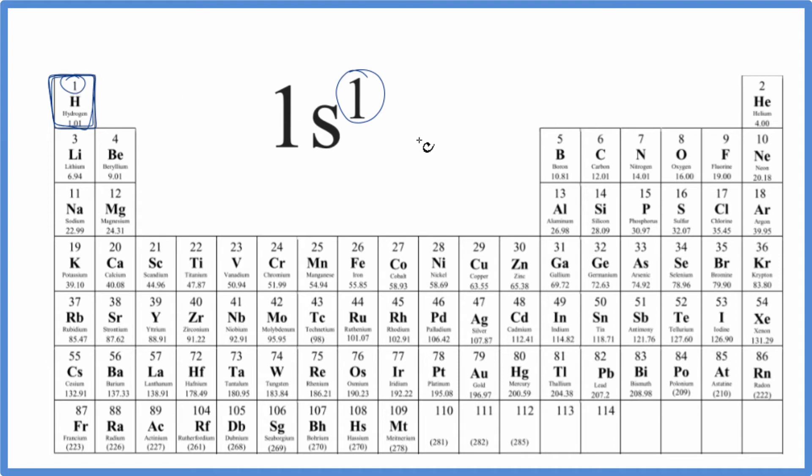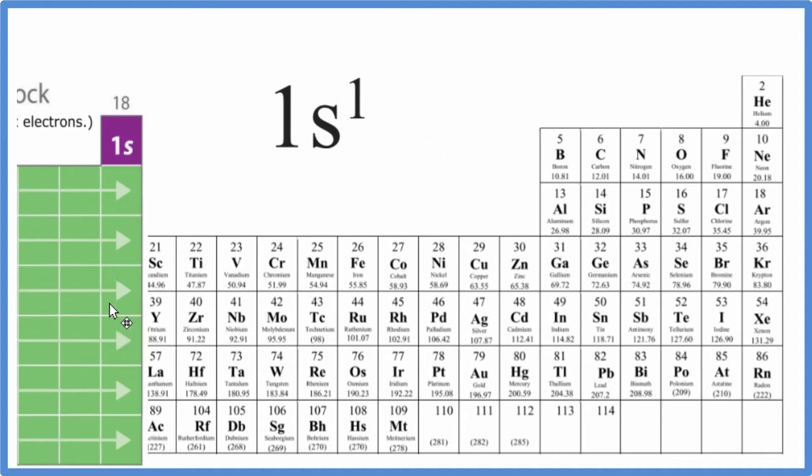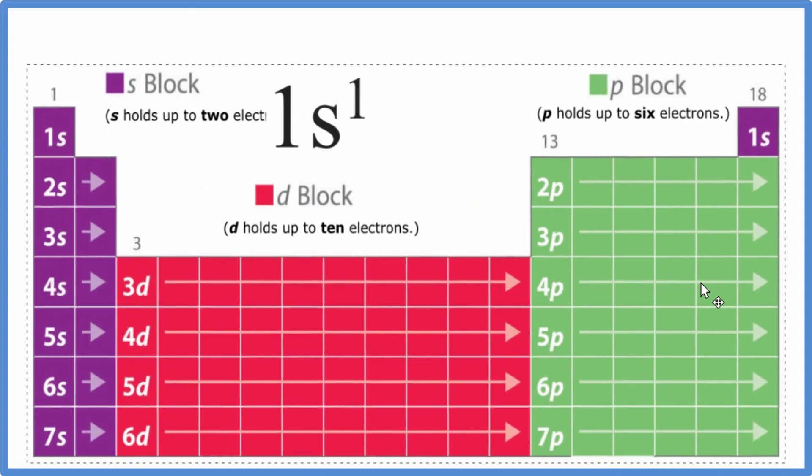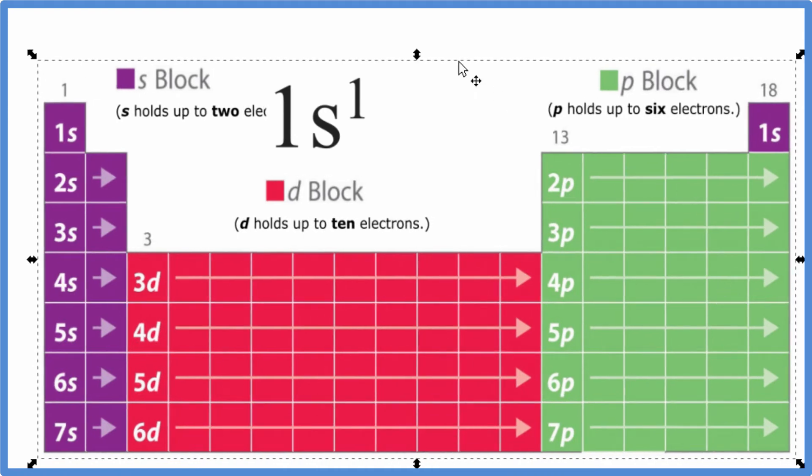There's another way we could do this as well. We could look at the periodic table, divide it up into orbital blocks. Here we have the s block, and it starts out with all these elements in group 1. They'll end in s1. The elements here, s2.